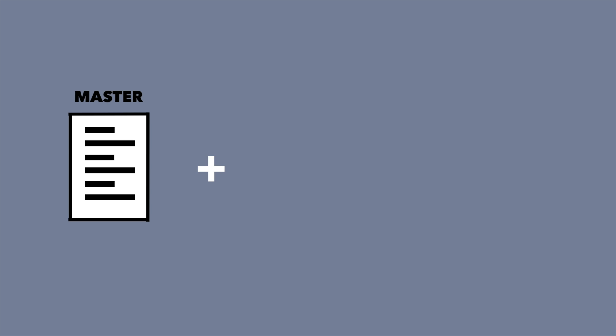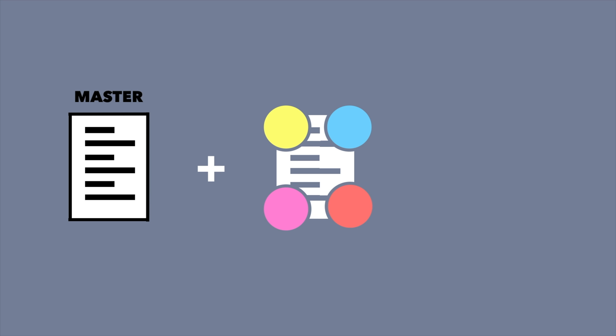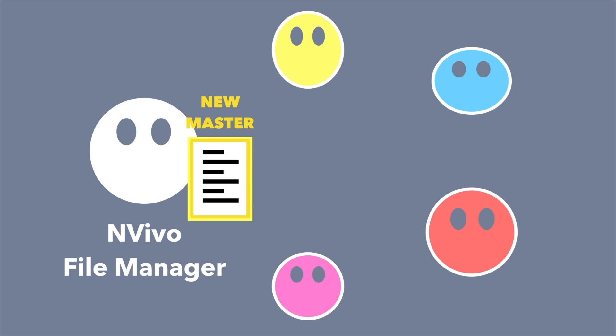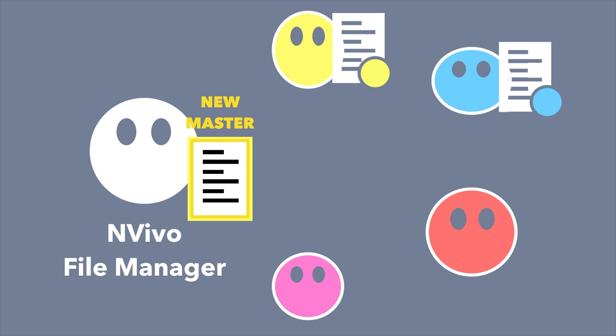Once you've made any changes to the merged team file — which might include updating node descriptions or updating the team protocol — the NVivo file manager will create new copies of the team file to distribute to team members. These will again have the name of the project, a new date, and each team member's initials, and you enter another distributed phase of the collaboration process.